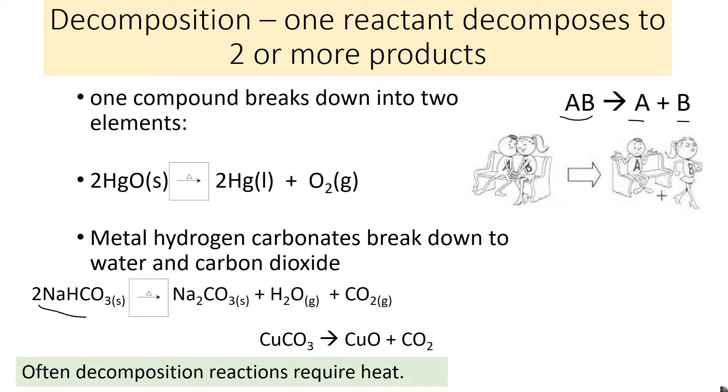This one is pretty interesting because this is the reaction of baking soda. Sodium hydrogen carbonate is baking soda. And when you heat baking soda it decomposes. And one of the products is carbon dioxide gas. And so that's how it works in baking. The carbon dioxide puts little gas bubbles in whatever you're making and makes them more fluffy.